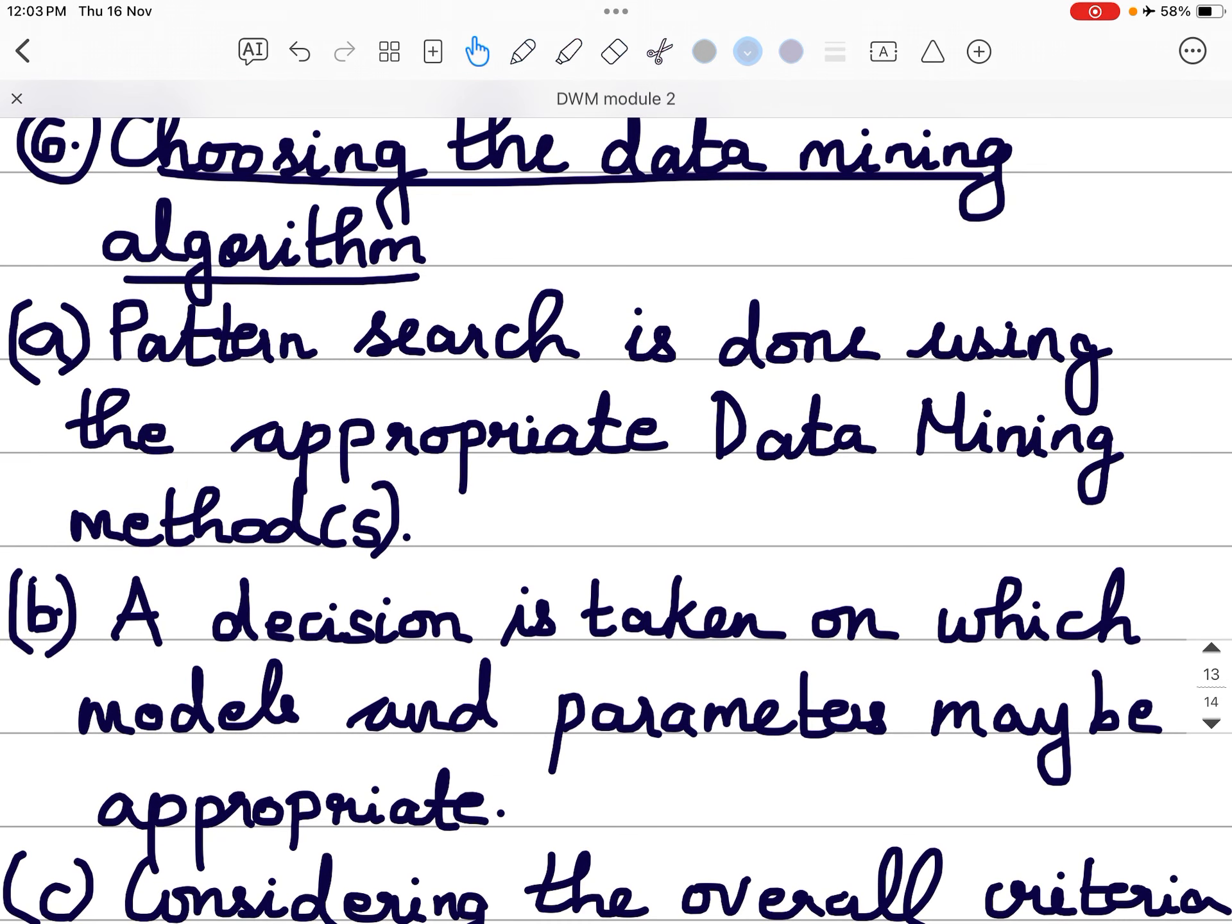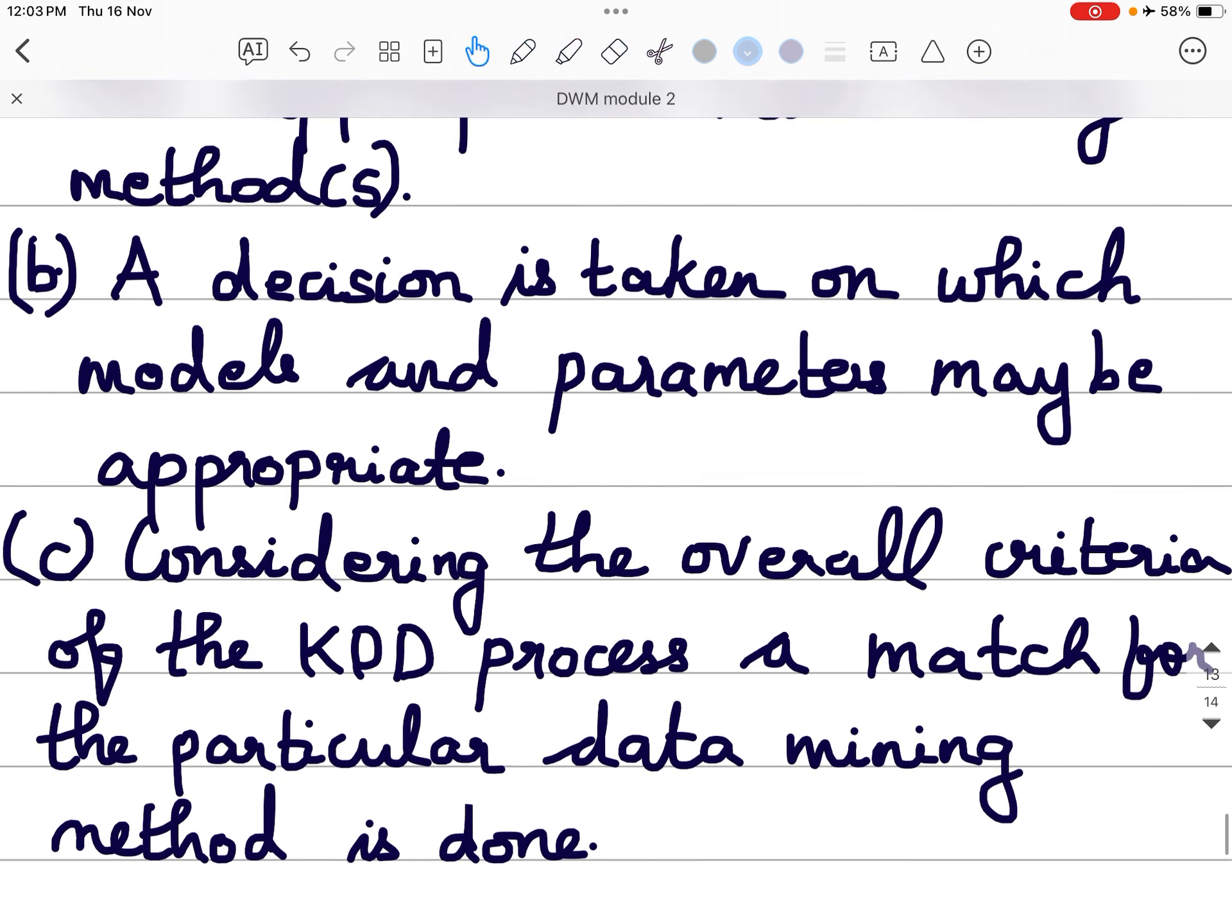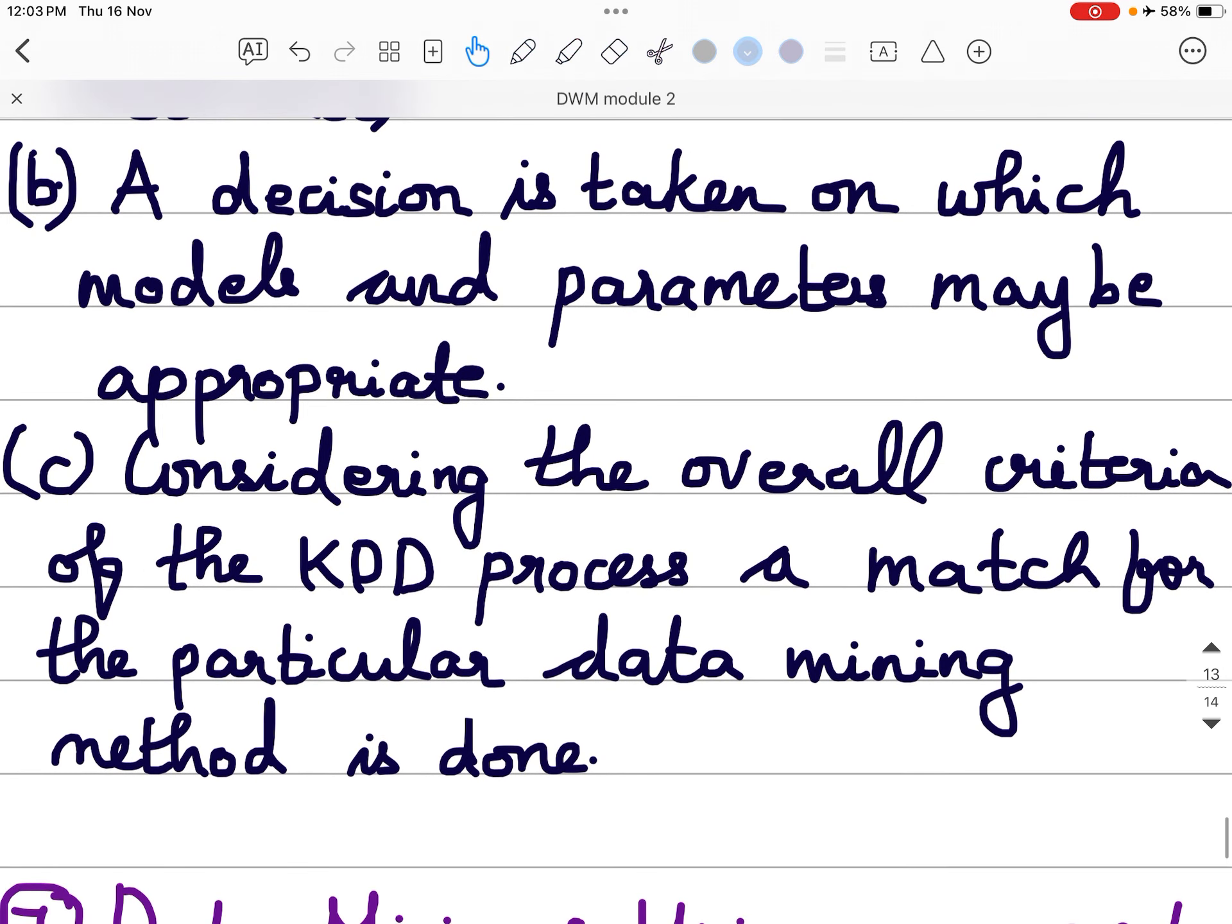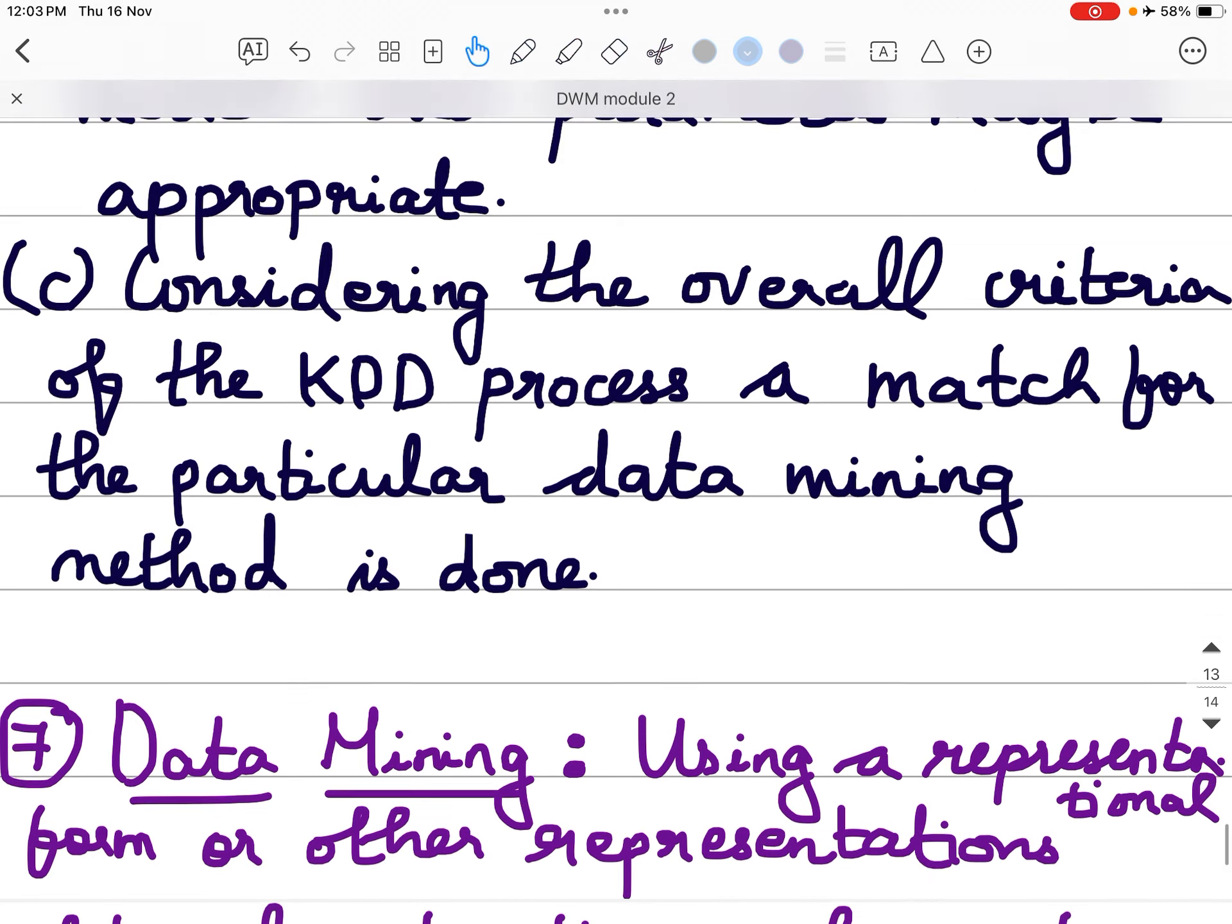Choosing the data mining algorithm, pattern search is done using the appropriate data mining methods. A decision is taken on which models and parameters may be appropriate. Considering the overall criteria of the KDD process, a match for a particular data mining method is done.